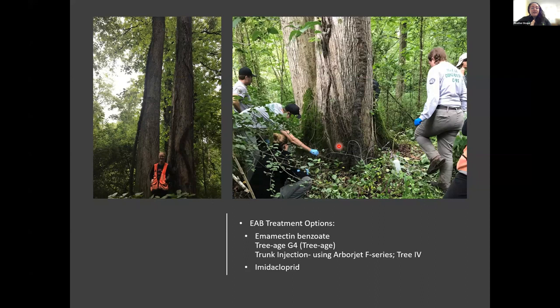This treatment is done through a trunk injection using F-series tree IVs — a pressurized bottle with the chemical. Once the lines are put into trees, you open the lines and the chemical moves through the system, is injected into the tree, and moves up to protect it from Emerald Ash Borer. This is important because of the EAB life cycle — you need to get to the beetle when it's causing damage to the tree's inner bark. That's why a trunk spray doesn't work and why trunk injection is more effective than a traditional soil drench, since the chemical goes directly into the tissues without binding to soil.